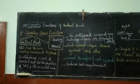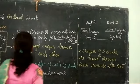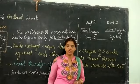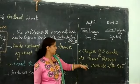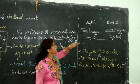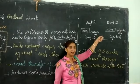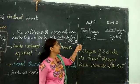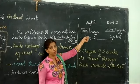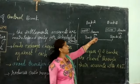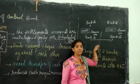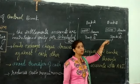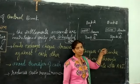To understand the clearinghouse function, consider this example. Assume there are two banks — Bank A and Bank B. Bank A receives a check of rupees 10,000 which is to be drawn on Bank B, and Bank B receives a check of rupees 15,000 which is to be drawn on Bank A.